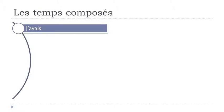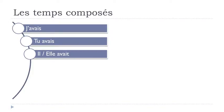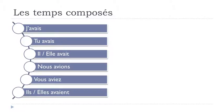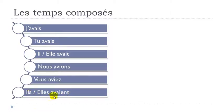Avoir at the imparfait: j'avais, tu avais, il avait, elle avait, nous avions, vous aviez, ils avaient, elles avaient. Final S not pronounced for j'avais and tu avais; final T not pronounced for il avait and elle avait; final S not pronounced with liaison for nous avions; Z sound for vous aviez; ENT not pronounced for ils avaient and elles avaient — phonetically the same sound as il/elle avait.